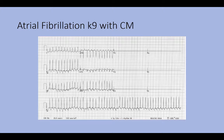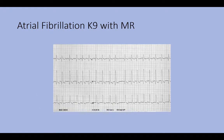Here is an ECG of a dog with atrial fibrillation. The bottom lead 2 rhythm strip shows upright narrow QRS complexes with a very rapid, irregularly irregular rhythm. Another ECG example in a dog with atrial fib shows a somewhat slower rhythm in lead 2, no obvious P waves, upright narrow QRS complexes, and in some leads possible F waves — oscillation waves — though no clear P waves are visible.